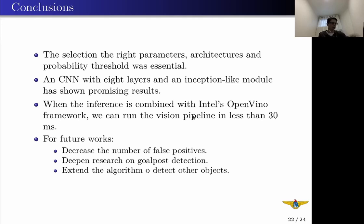For our conclusions, by selecting the right parameters and architectures, it is possible to run a CNN in a limited environment. A convolutional neural network with eight layers and an Inception-like module has shown good performance and generalized to many cases. Combined with Intel OpenVINO inference framework, we could run the vision pipeline in real-time, faster than our camera's framerate. For future work, we plan to decrease the number of false positives as they are harmful to our robot software, and we would like to deepen our research on goalpost detection and extend the algorithm to detect other objects on the soccer field.